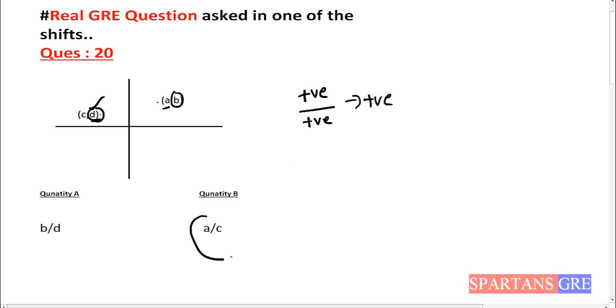So here B by D is we are getting positive. Whereas A by C, here A is positive and C will be negative minus X. So you will get a negative result. Always positive number will be greater than negative number. So quantity A is greater than quantity B.